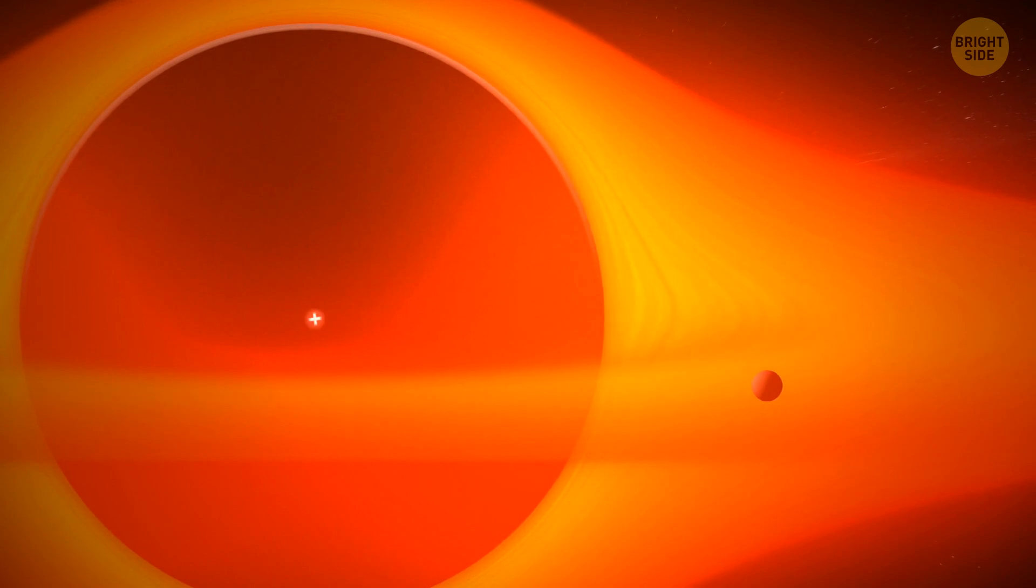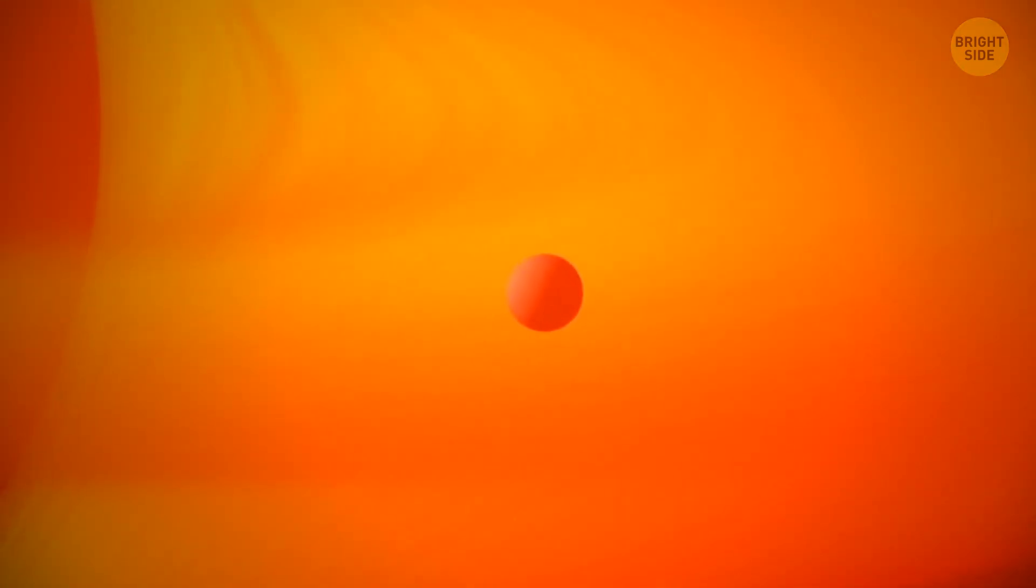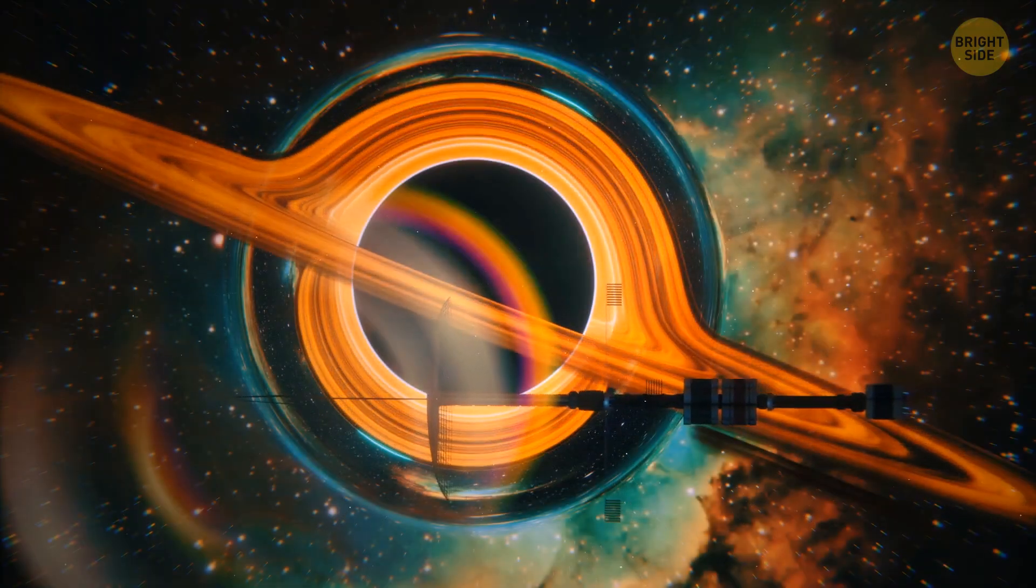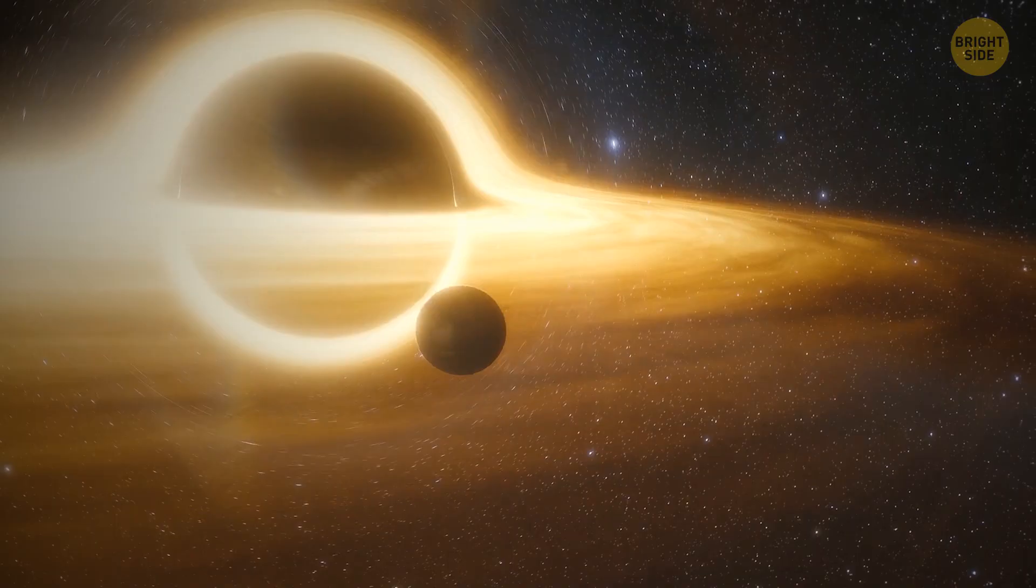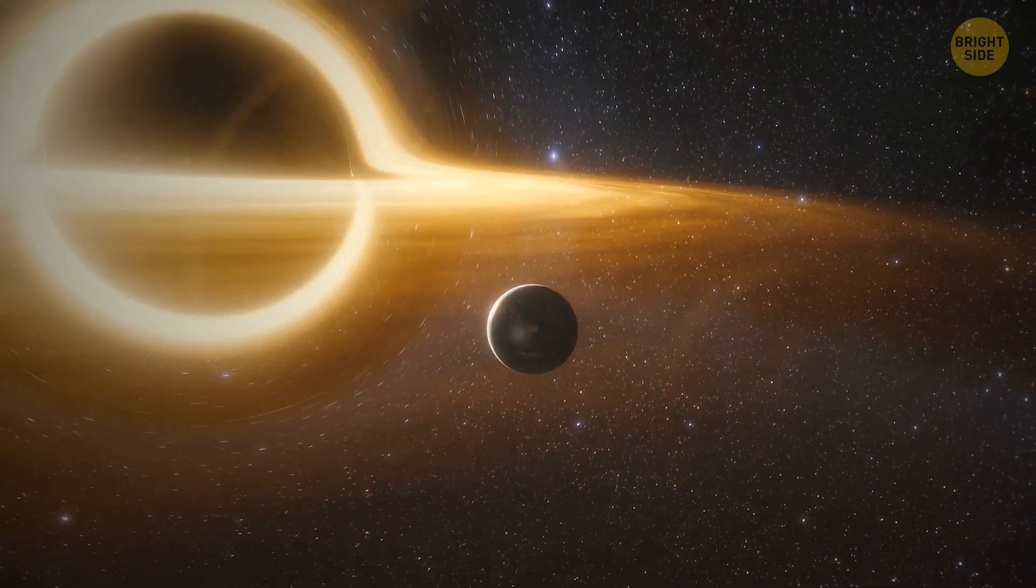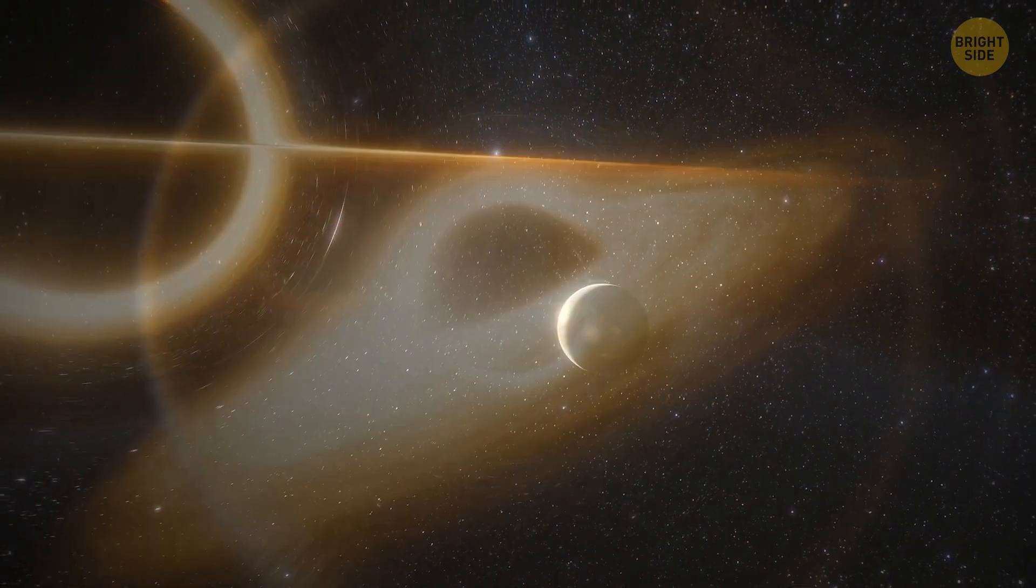Black holes aren't some hungry predators that roam the universe preying on poor, unsuspecting planets. They just gulp down the stuff that ends up too close to them. On top of that, they sometimes fling out spitballs the size of a planet. How does this matter escape the pull of black holes? Well, typically, it manages to slip away before going past the point of no return.